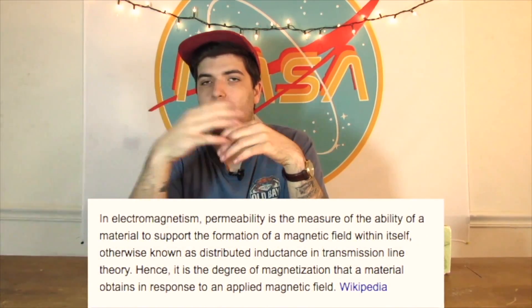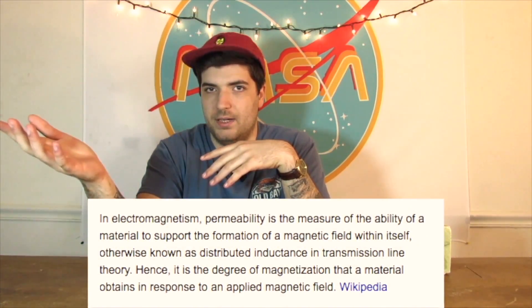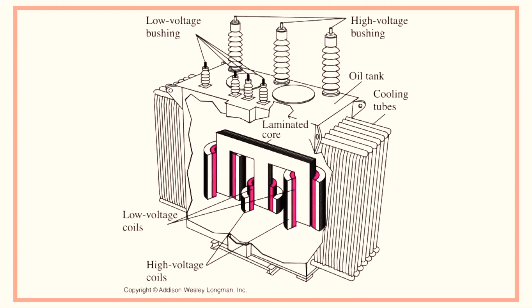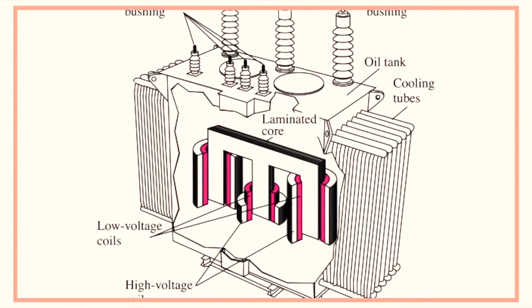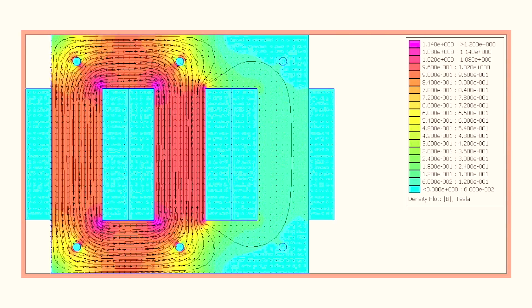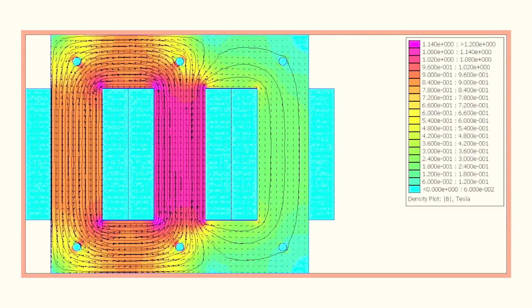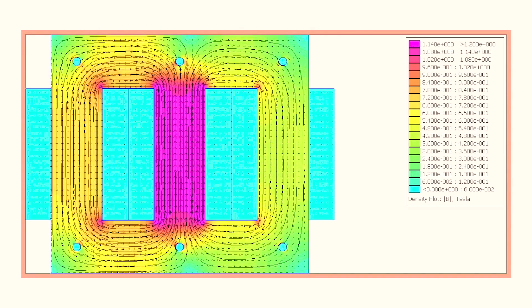Having a metallic core with a high permeability — the ability to become strongly magnetized — allows for a much, much stronger magnetic field to develop from the primary coil. Both the initial magnetic field from the primary coil and the magnetization of the core contribute to a much larger electric field in the secondary coil.